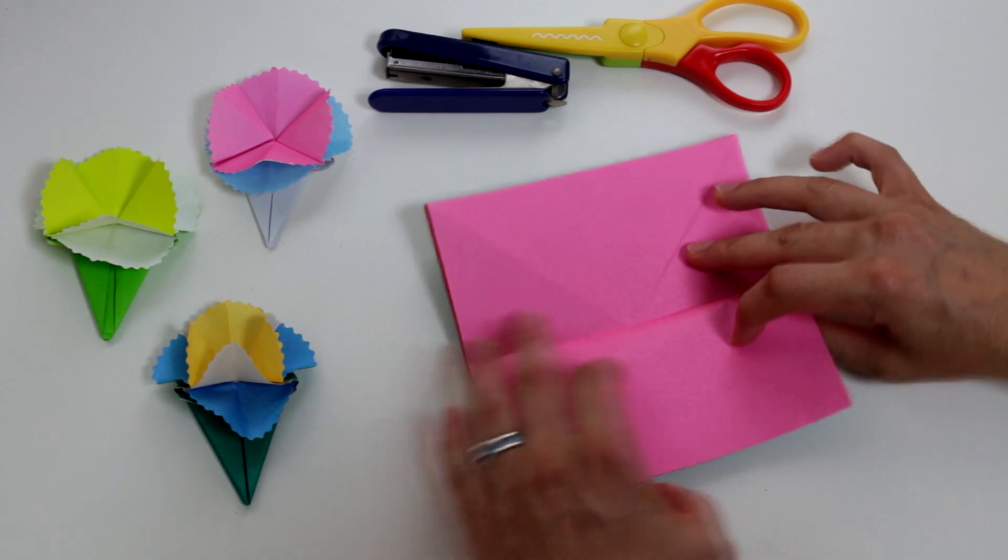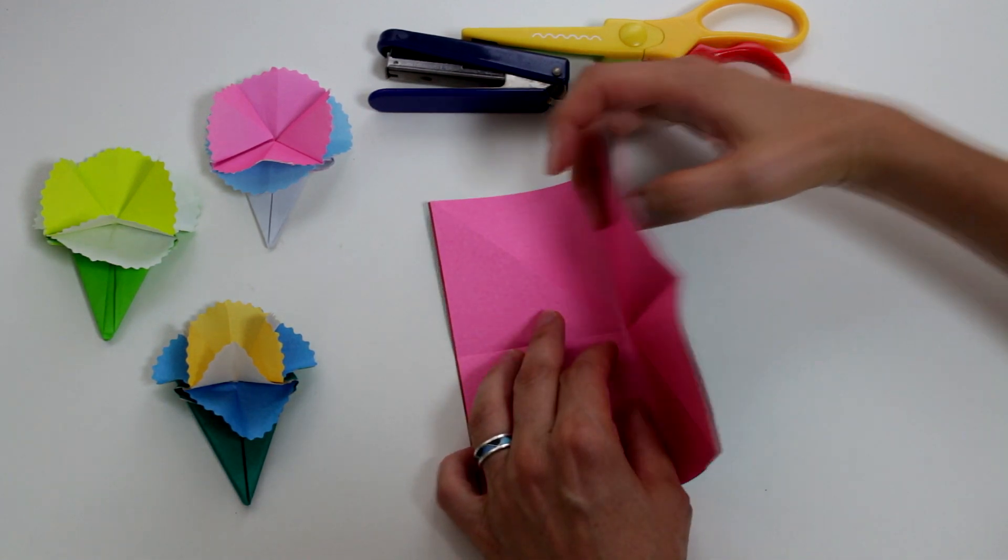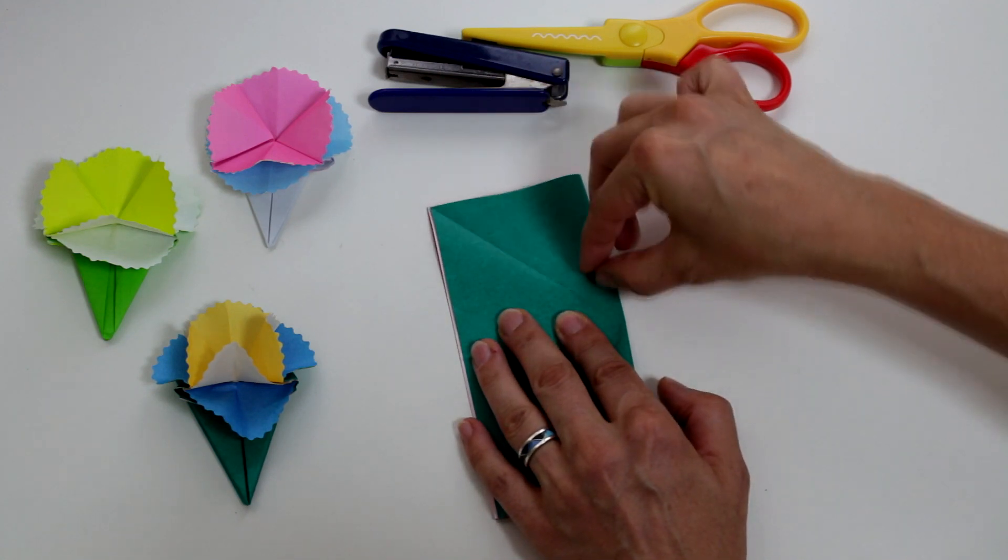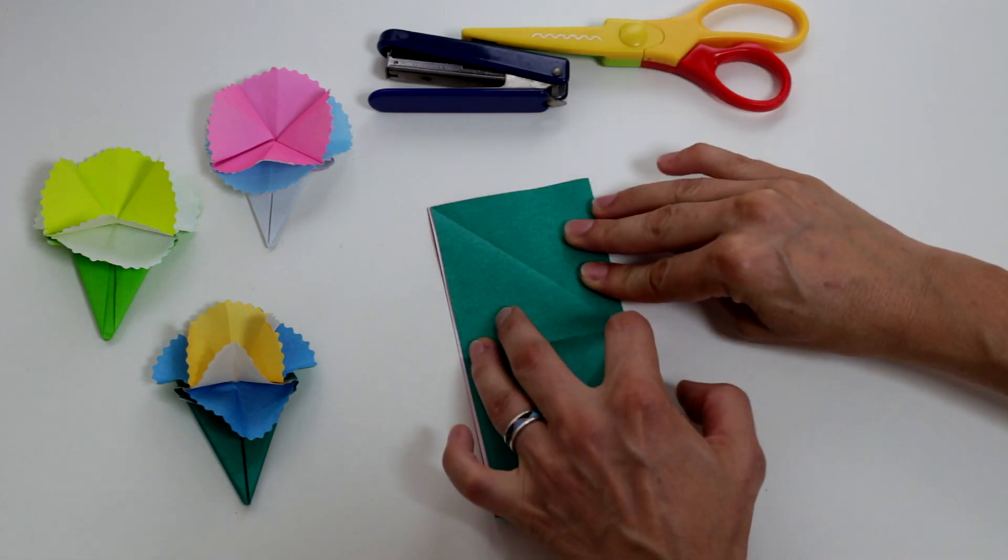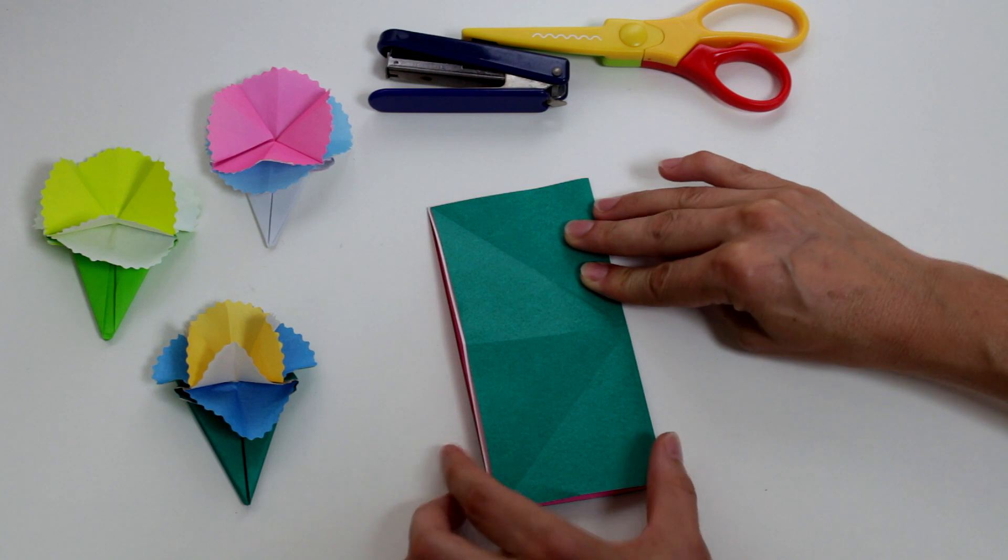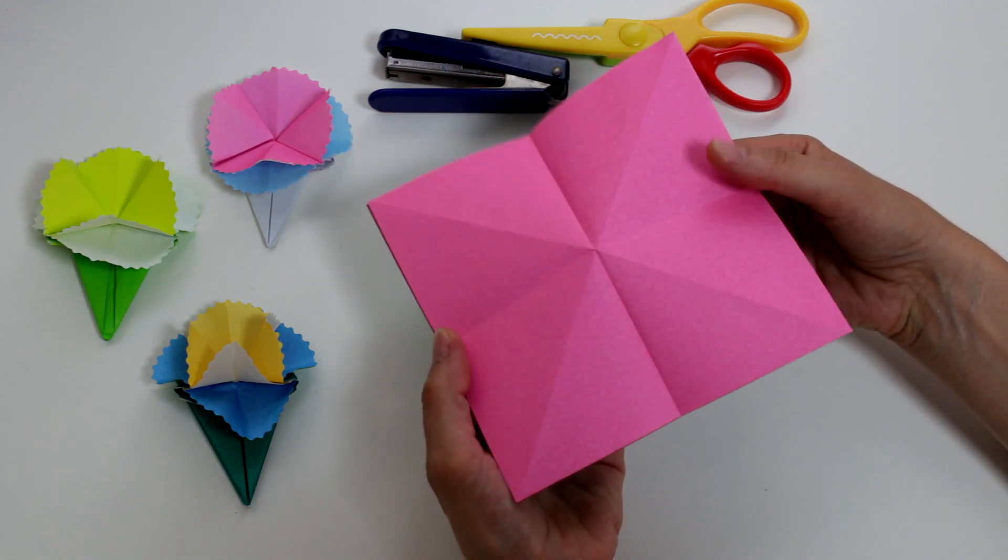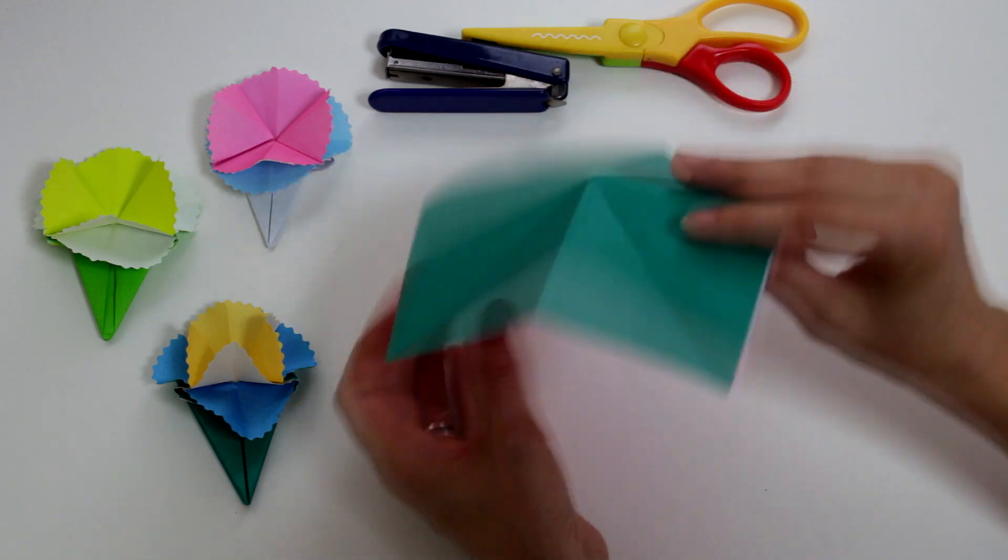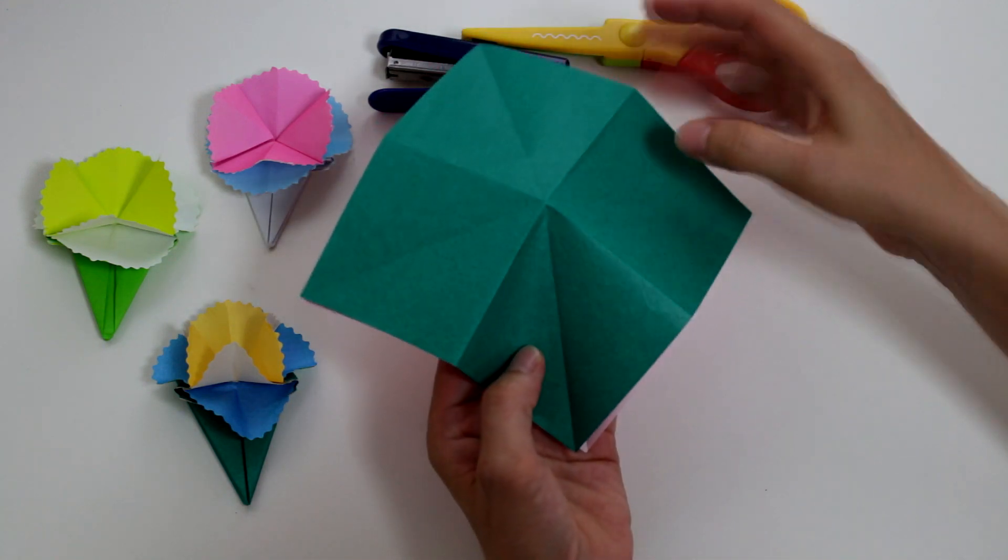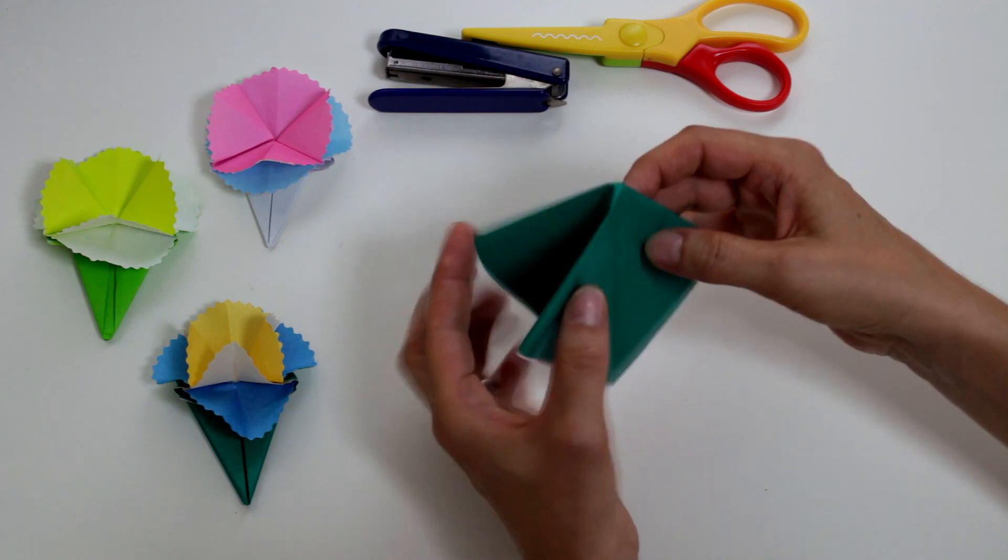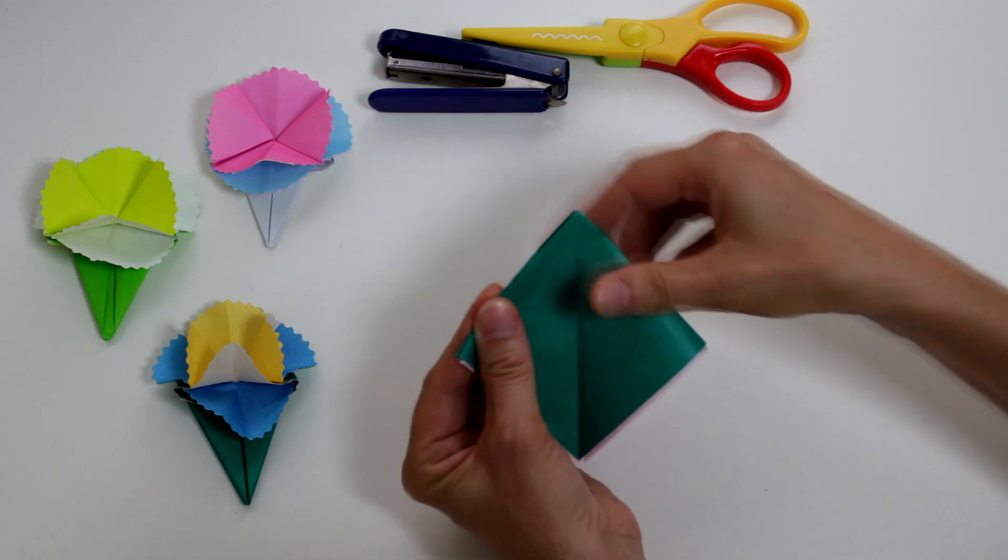Unfold it and fold it vertically in half. Unfold it. Now using these creases that we just made, we're going to flatten the papers to complete a square base.